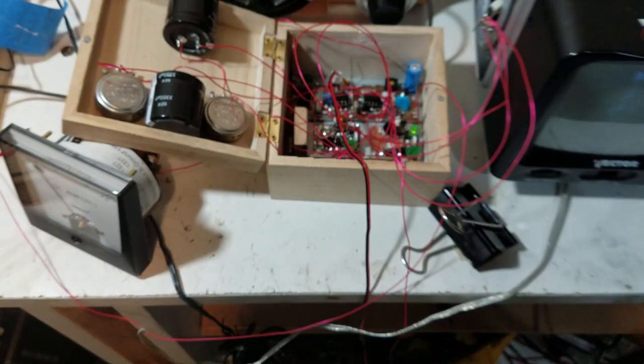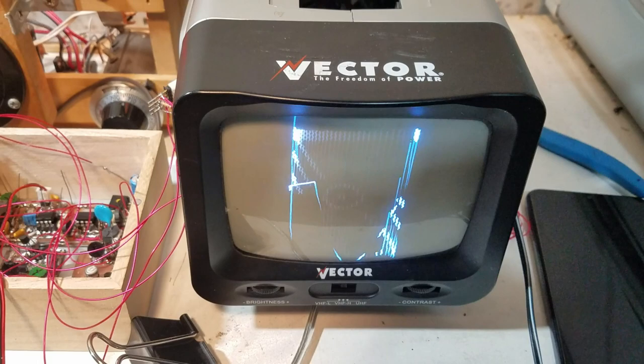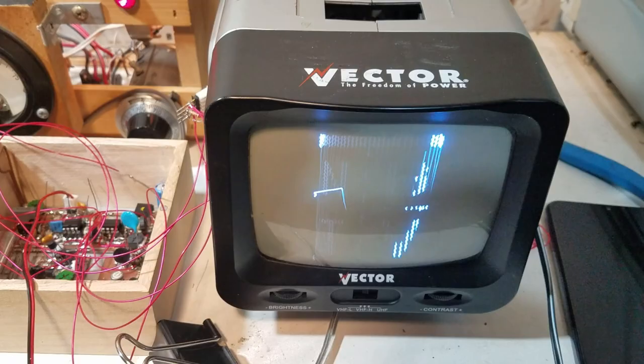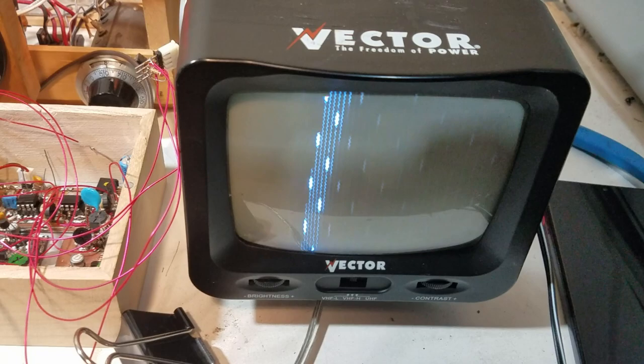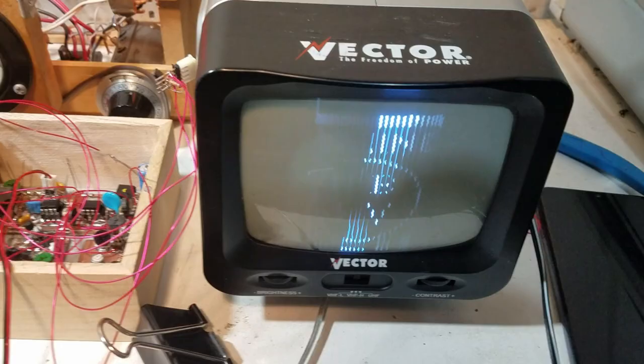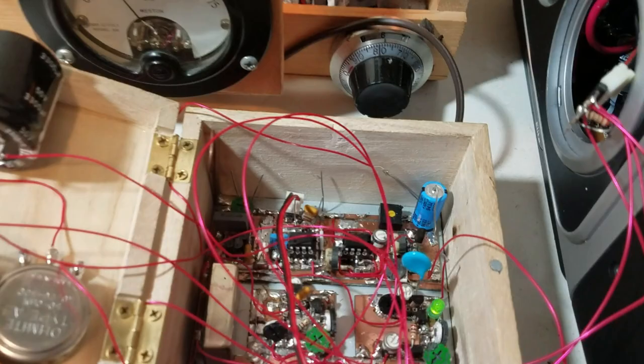This monitor right here was a bit of a project in and of itself. It was originally an NTSC video monitor that I modified by disconnecting the yoke and putting in an inductor where the original horizontal winding connected to keep the flyback happy. I also disconnected the cathode from the original video amplifier, and I have that coming out to the video amplifier right here.